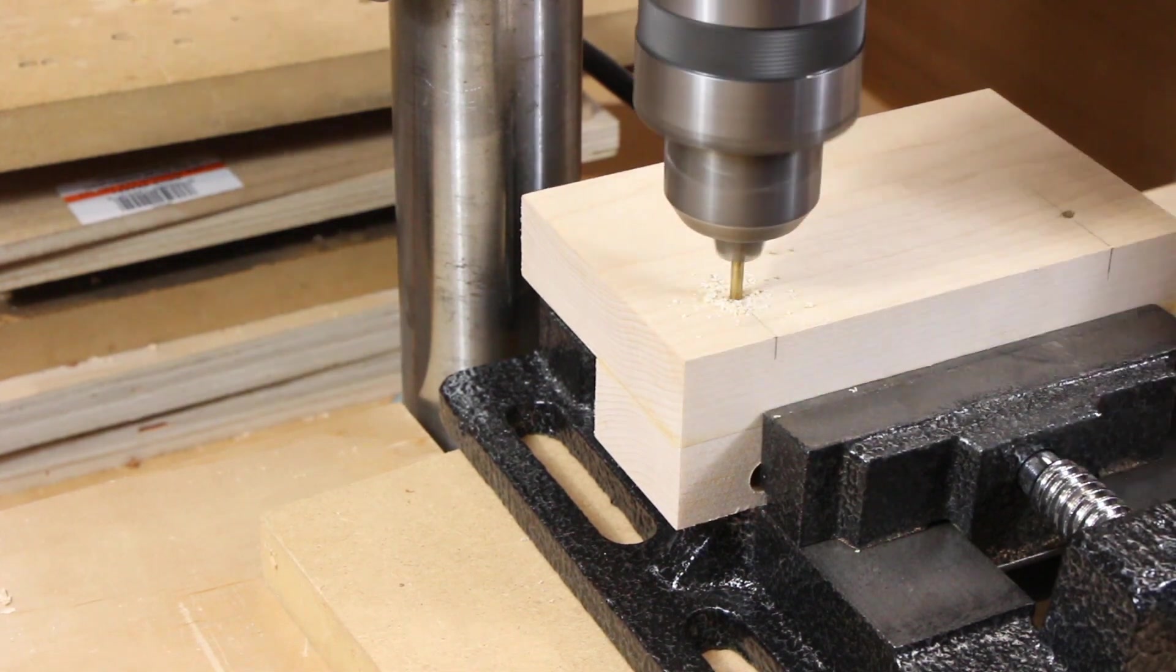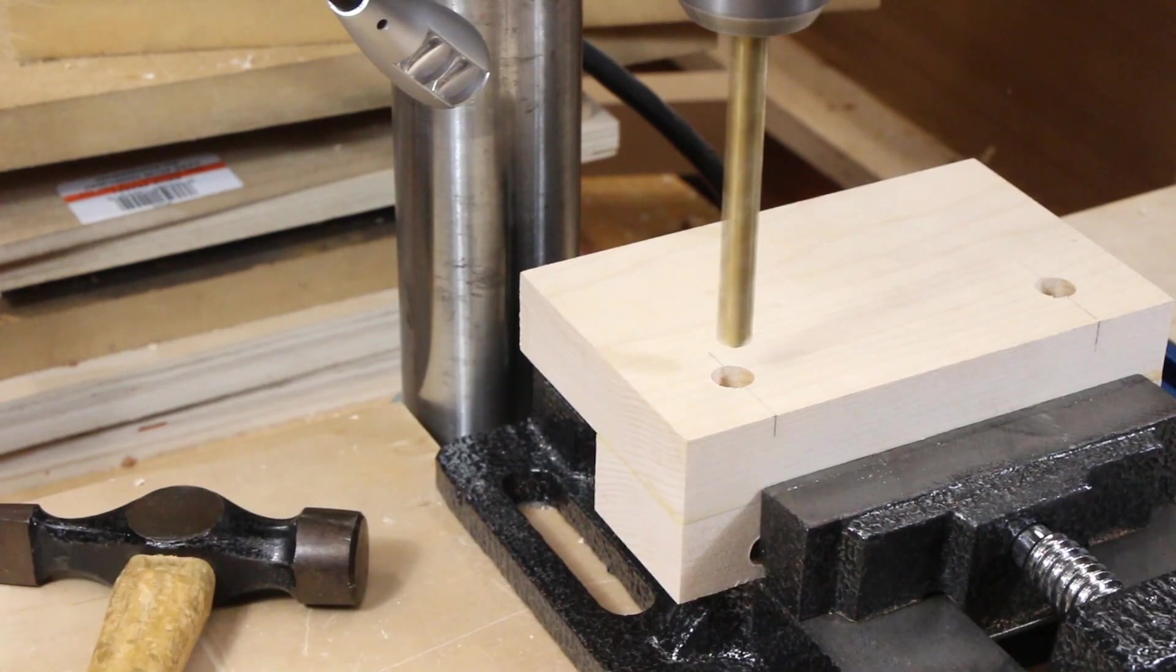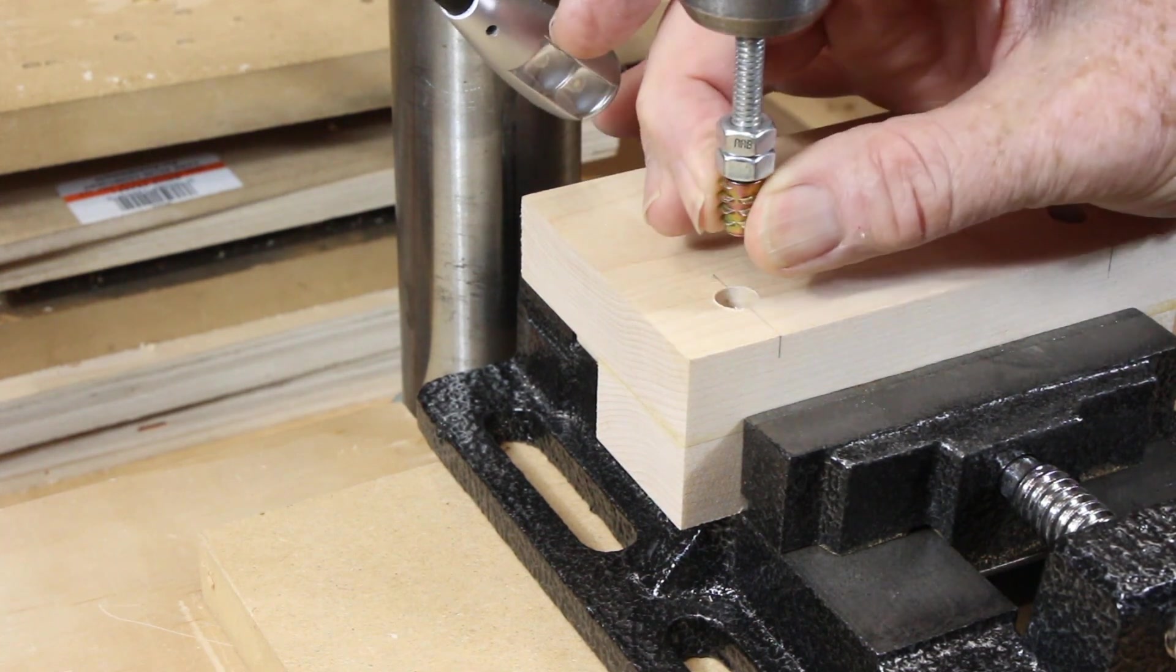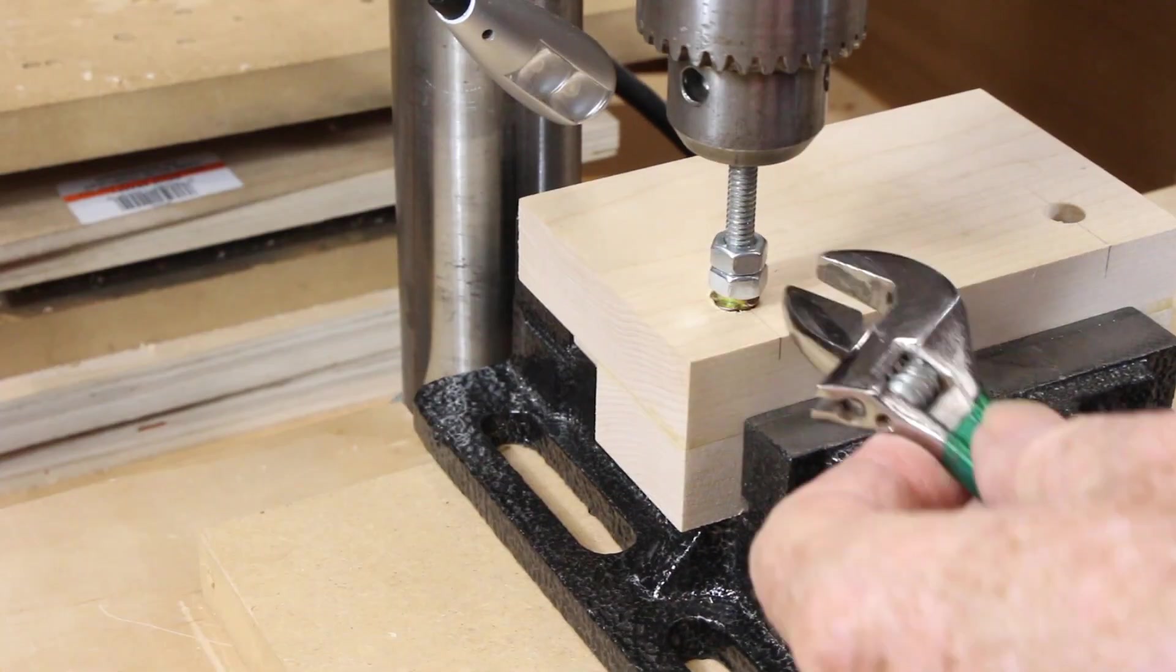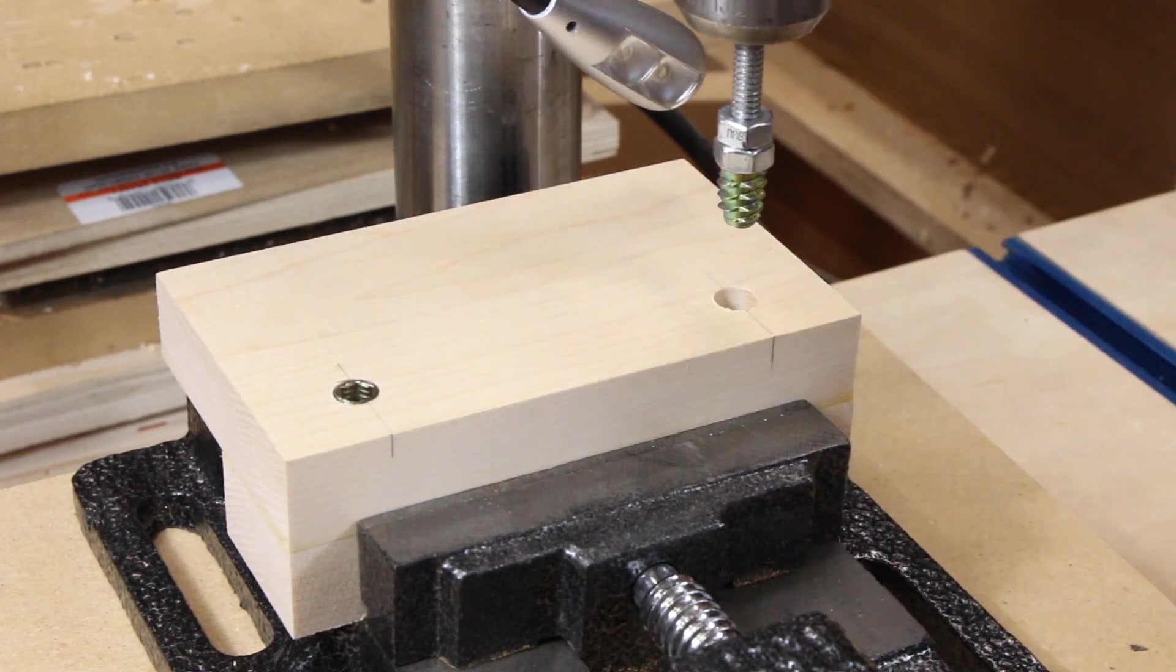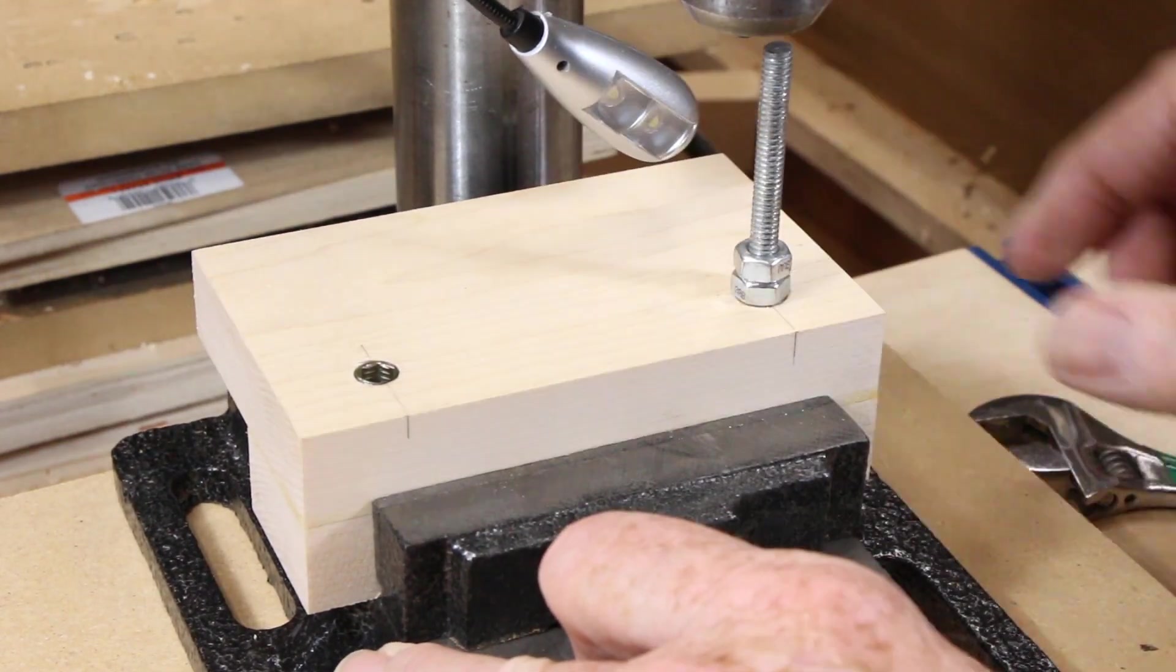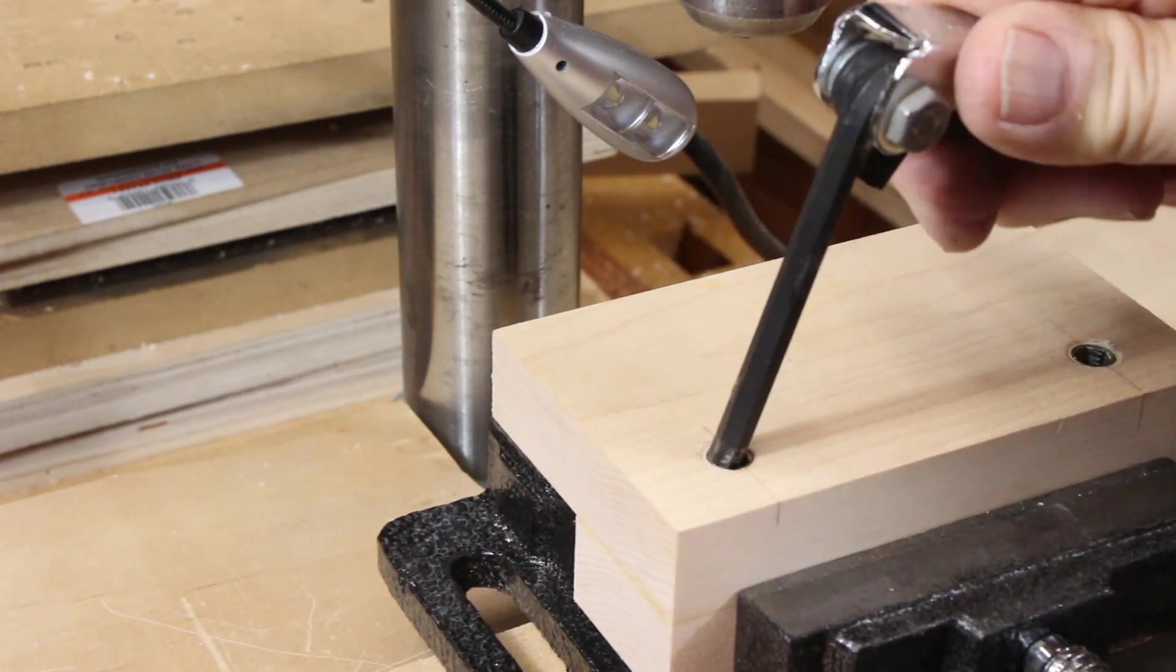The adjustment screws require threaded inserts, installed just as before. Very hard wood, like maple, requires slightly larger pilot holes than soft wood. I recommend that you install one in a piece of scrap first to get the drill sizes exactly right.